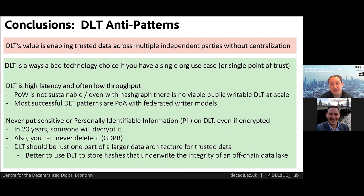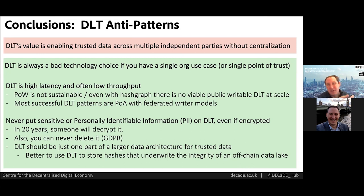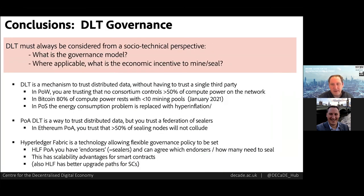One design pattern seen repeatedly is using DLT not as an immutable data store in its own right but as a technology for underwriting the integrity of cloud-based data stores — holding data off-chain and holding hashes of the data on-chain, like the Archangel archives example. If your data is sensitive or contains PII, you can't store it on a DLT because most jurisdictions have laws — like GDPR in Europe — giving users the right to remove their data. Even encrypting data on a chain is insufficient because in 20 years someone could crack the encryption and the data won't be private.